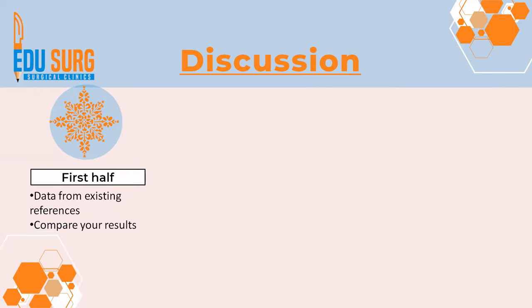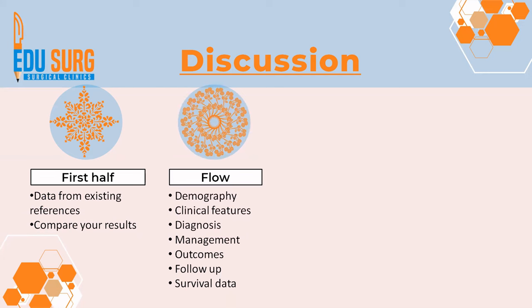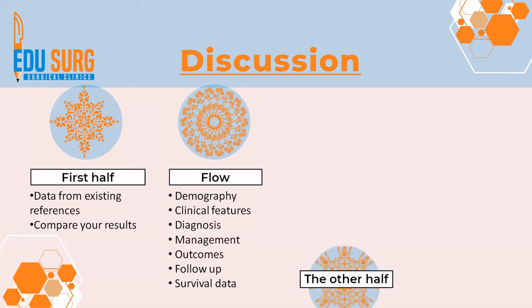How to structure the discussion: the first half is very important when you take data from existing references and compare it with your results. The flow can be as follows — if it's a disease-based article, you can have demographics first, compare your data versus prevalent data, then look at clinical features, diagnosis, management, outcomes, follow-up, and survival data. If your paper is on outcomes, you can directly start with management and then go towards outcomes and discuss them in more detail. This line of flow is what will help you in structuring your discussion properly.